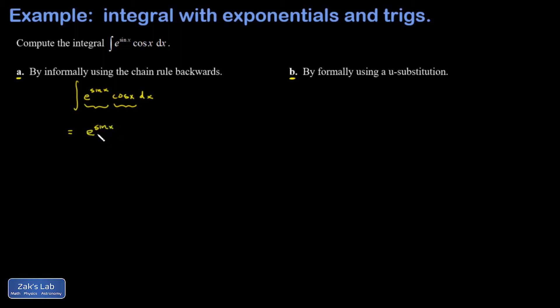If I differentiate that, I would have to use the chain rule, and it would produce e to the sine x times the derivative of sine x with respect to x, which is that cosine x piece sitting right next to it.